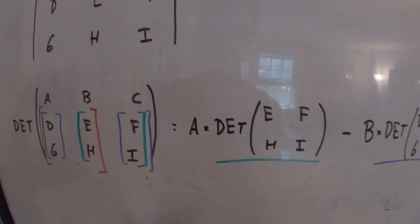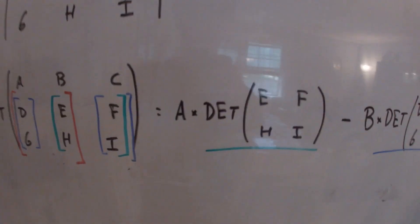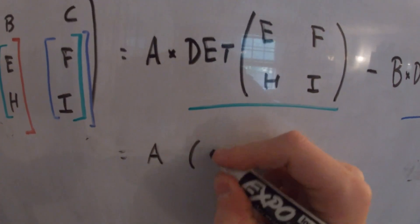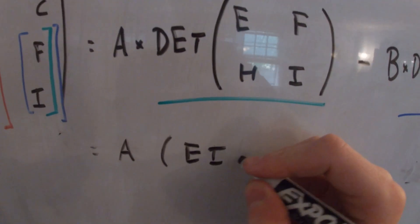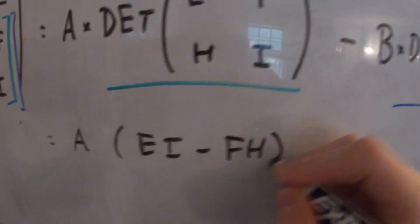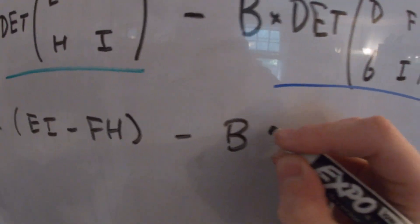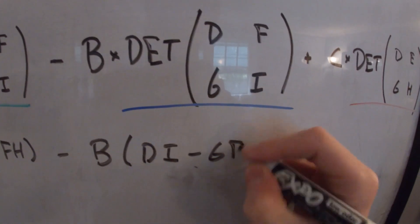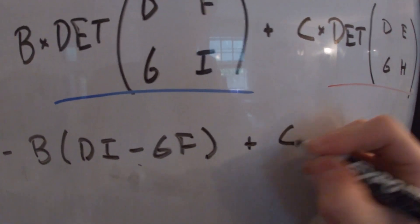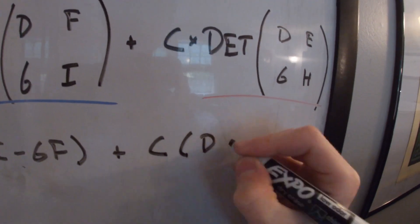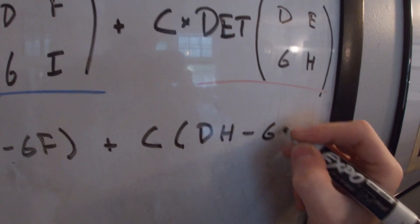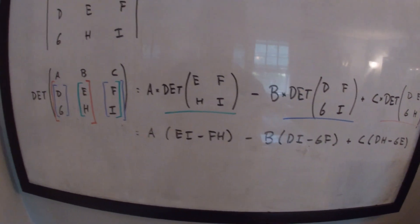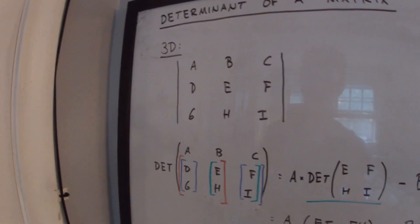At this point we can take the determinant of these 2D matrices the same way we just learned. So we have A times (EI minus FH), minus B times (DI minus GF), plus C times (DH minus GE). We evaluate those and get our determinant of the 3D matrix.